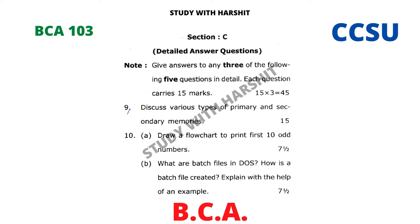Section C: give answers to any three of the following five questions in detail, each question carries 15 marks. Question nine: discuss various types of primary and secondary memories. Question ten (a): draw a flowchart to print the first 10 odd numbers.